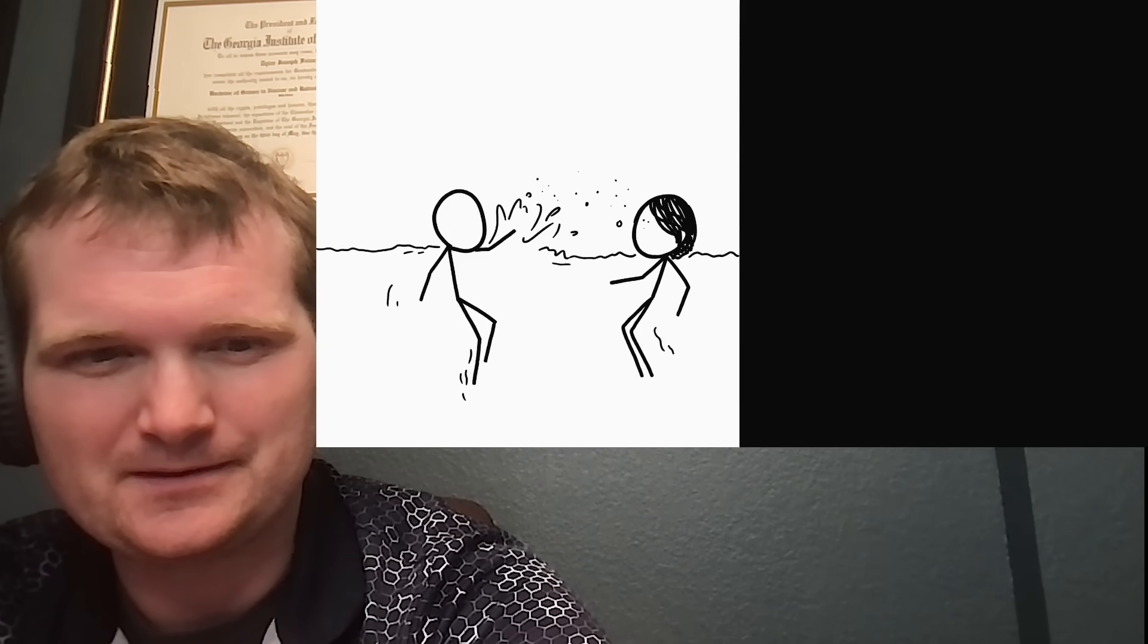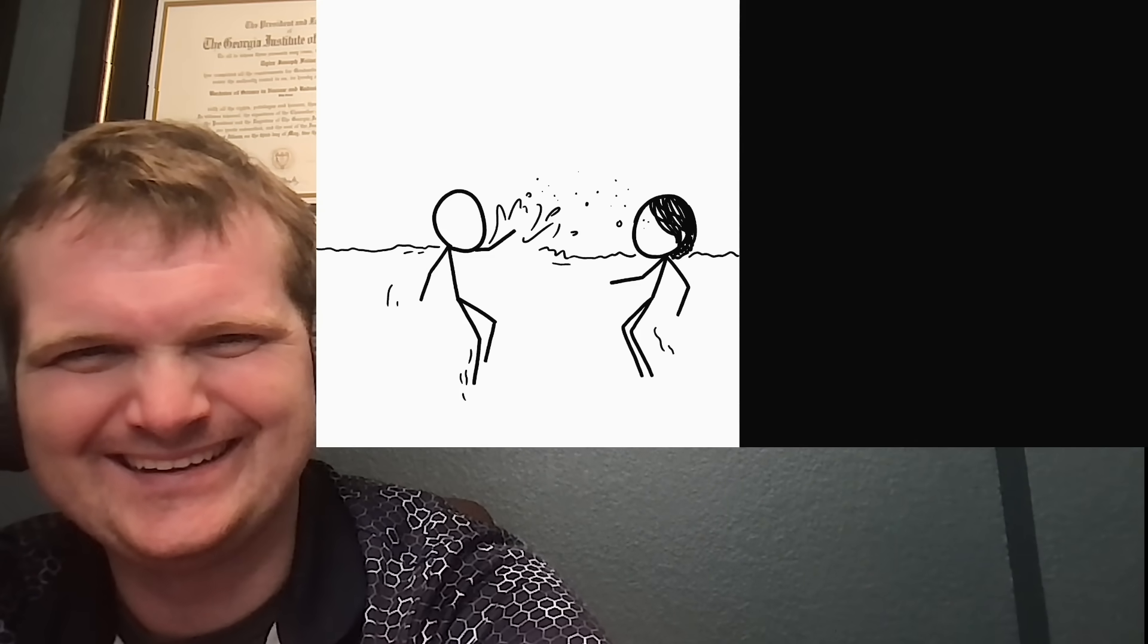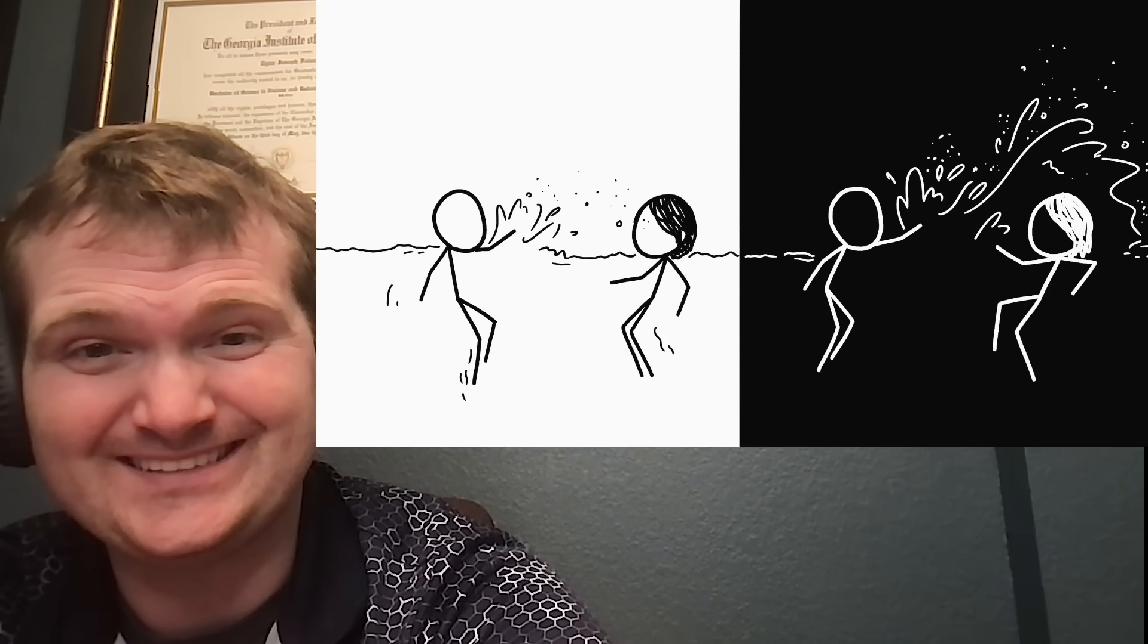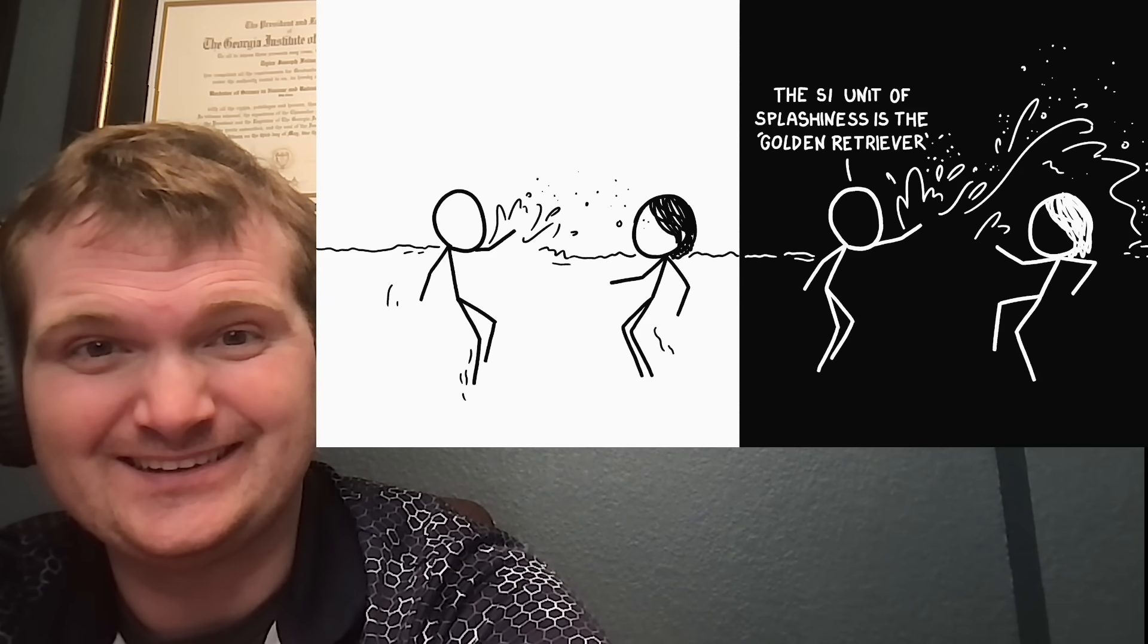Then we get to waves and splashes. Because of the reduced gravity on the moon, the water would be launched upwards much more easily, just like the swimmers. The result would be larger waves and more flying droplets. In technical terms, a pool on the moon would be more splashy.